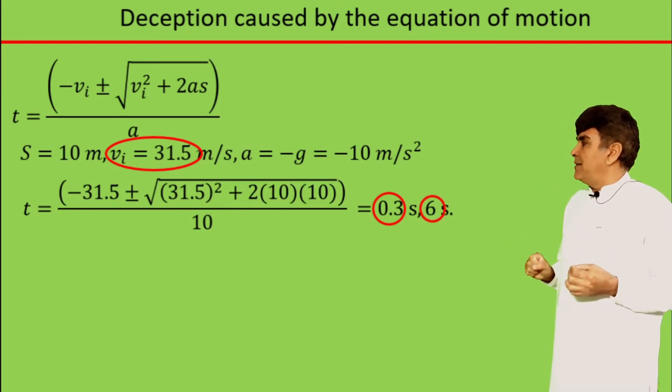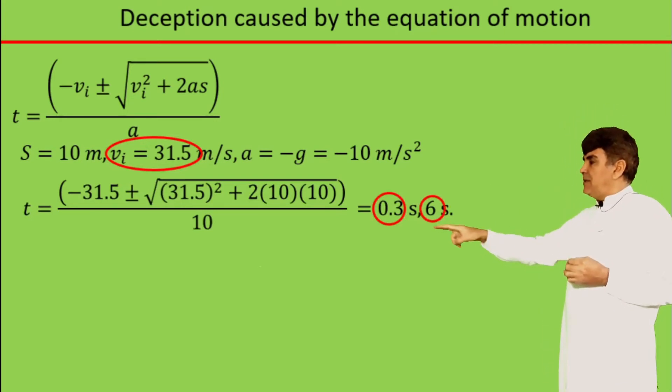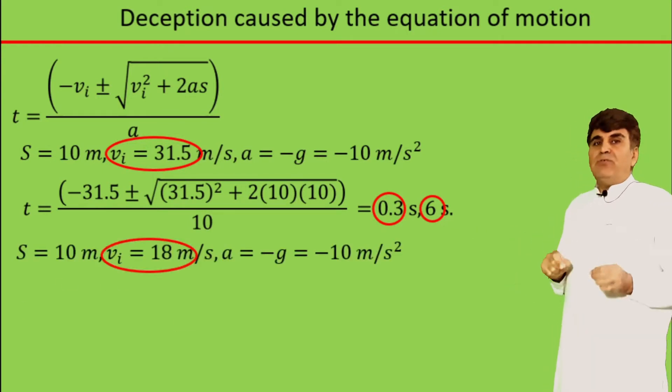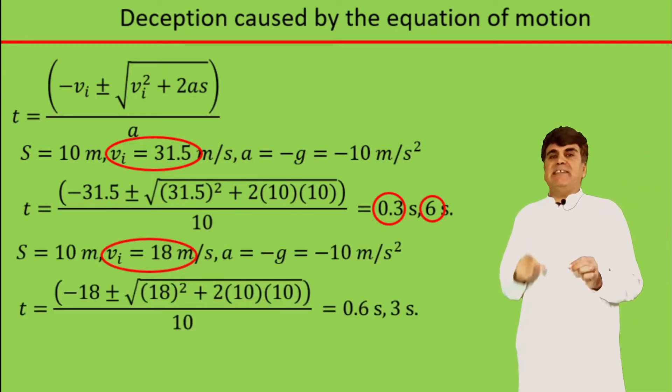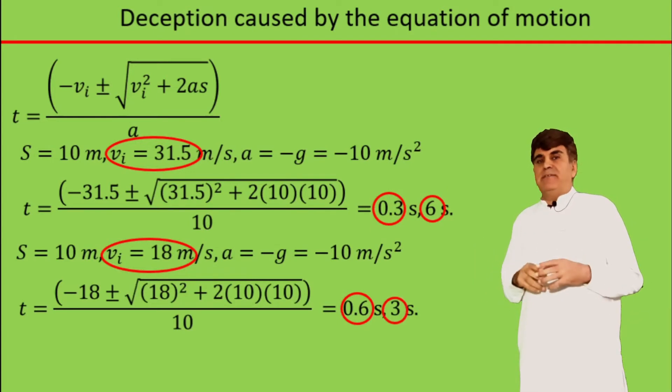And similarly, if I use the initial velocity of 18 meters per second, I get the two values of time equals 0.6 seconds and 3 seconds. So for each value of initial velocity, I have two values of time.